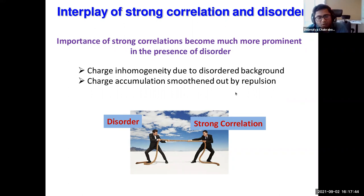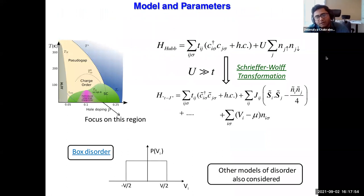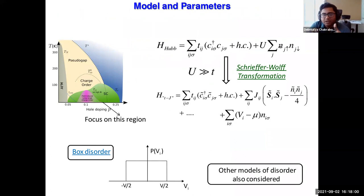To understand the role of these effects, let me introduce the model we will be considering for most of the rest of the talk. We start from the Hubbard model, which has hopping and on-site repulsion between the two electrons.